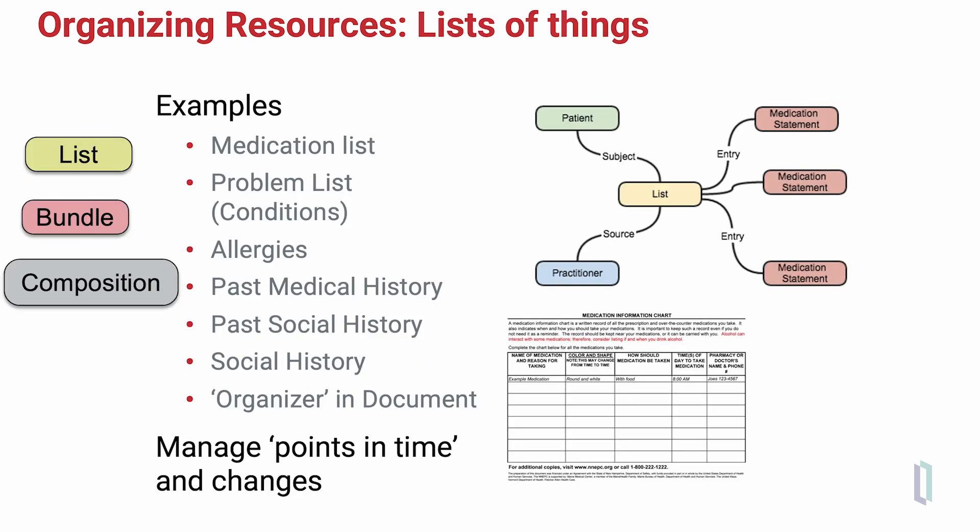There are a number of FHIR resources that are used to represent or organize the FHIR data that is part of a use case. Examples are the list resource, which might be a medication list, problem list, or allergy list.